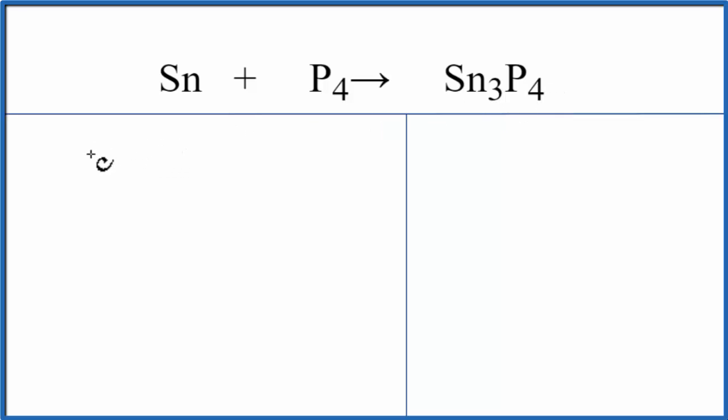So let's count the atoms up on each side of the equation. Sn, that's tin, we have one of those. Phosphorus, we have four. On the product side, Sn, we have three, and the phosphorus, we have four.